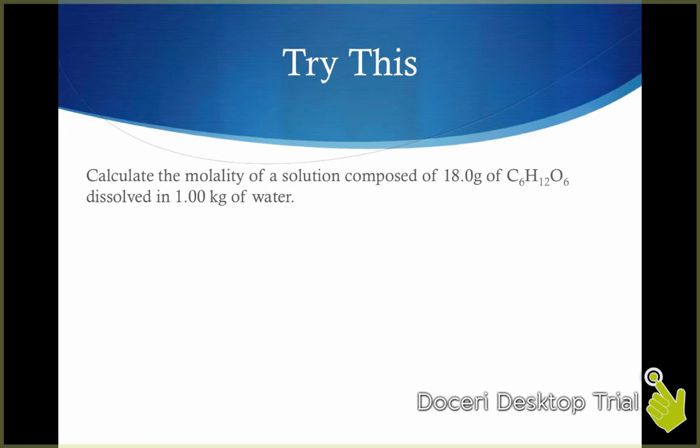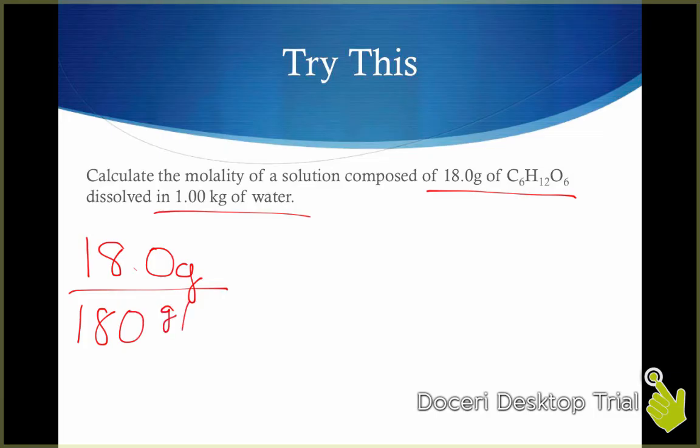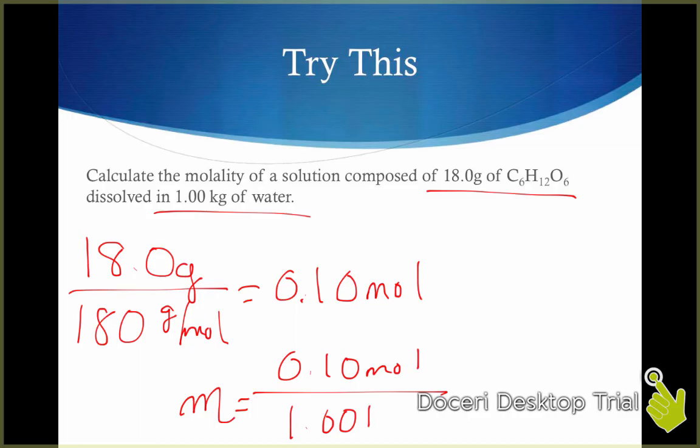Let's do an example together. Here we're asked to determine the molality of 18 grams of sugar dissolved in 1 kilogram of water. First, I have to convert 18 grams of sucrose to moles, so I'm going to divide by the molar mass, and I get 0.1 moles of sugar. Now using my molality equation, I can divide 0.1 moles divided by 1.00 kilograms, and I get a molality of 0.10, which again we abbreviate with a lowercase cursive M.